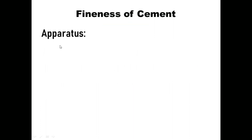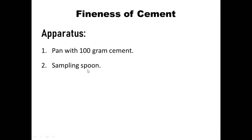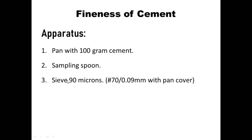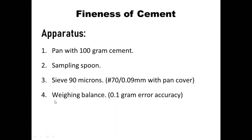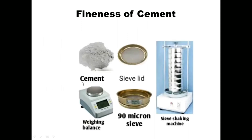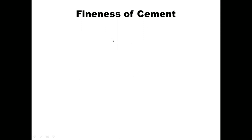The apparatus we need for this test: a pan with 100-gram cement sample, a sampling spoon, a sieve of 90 microns with pan cover, and a weighing balance having 0.1-gram accuracy. In this picture you can see the pictures of the apparatus.